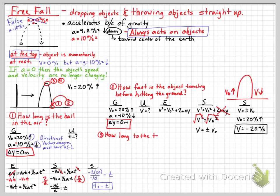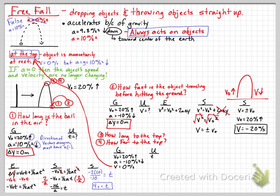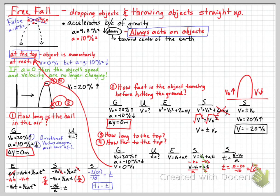Questions three and four: how long does it take to reach the top, and how high does it go? Using our givens — v₀ = 20 m/s up, a = −10 m/s², and v = 0 m/s at the top (the object is momentarily at rest but still being accelerated by gravity). Our equation is v = v₀ + at. Rearranging for time: t = (v − v₀)/a = (0 − 20)/(−10) = two seconds.